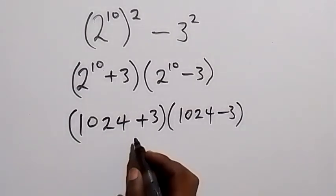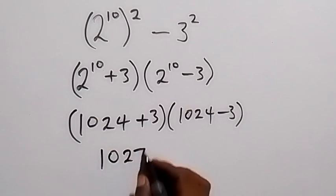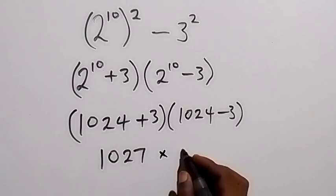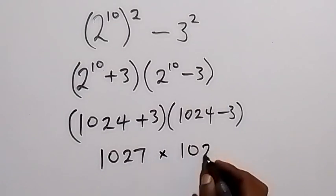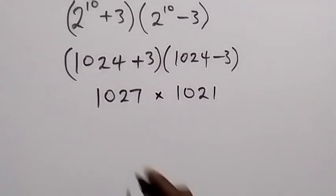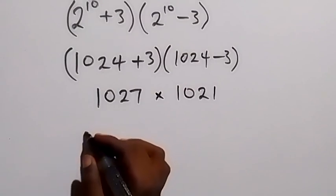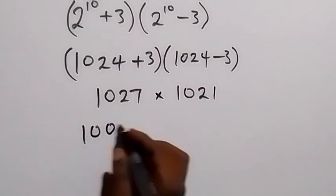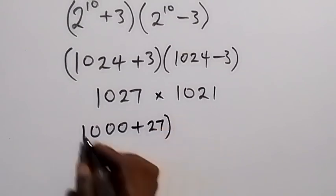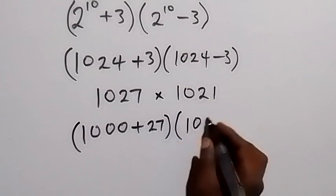When we add these together, we have 1027 times 1021. In the next step, we can also factor this as 1000 plus 27, and multiply by 1000 plus 21.